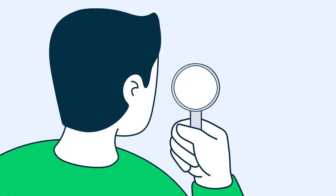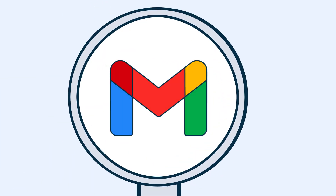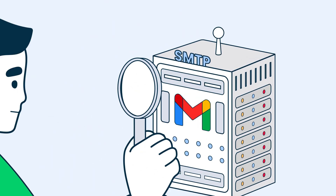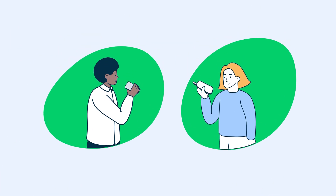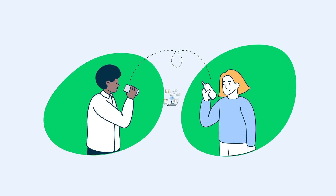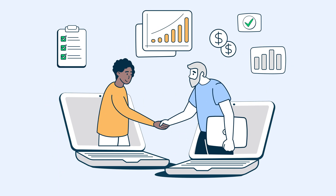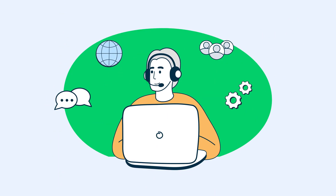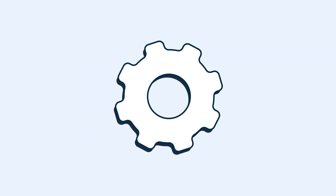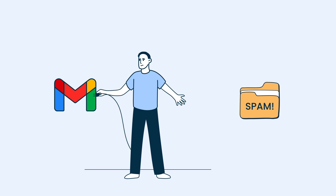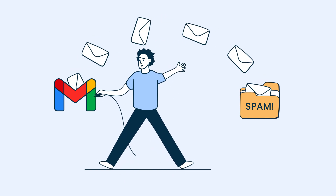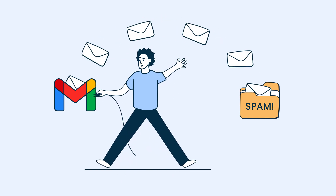Understanding Gmail's SMTP is crucial for any business that relies on email for customer communication, sales, or support, as misconfigured settings or improper usage can cause emails to land in spam instead of the inbox.